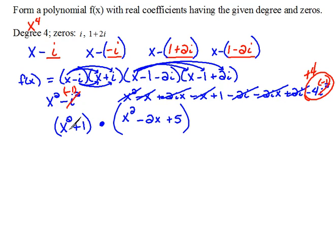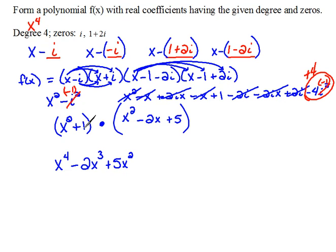We're at this point down to where we have to multiply this binomial to this trinomial, which means I'm going to have to be doing our distribution. So x squared times x squared would give us x to the fourth, and then times negative 2x would be minus 2x cubed, and then times 5 would be plus 5x squared. Now distributing our 1, we would have plus x squared minus 2x plus 5.